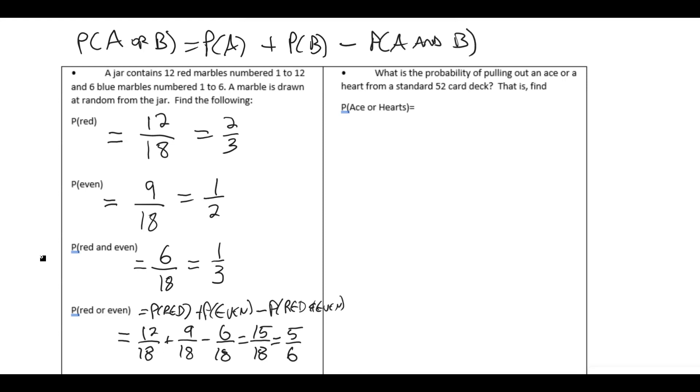Okay. Now if you wanted to consider the sample space, you could probably get to the 15 out of 18 that are red or even. Basically there's the initial 12 that are red, and there's three more even ones that are blue. So 12 plus 3 is 15 out of the total 18.